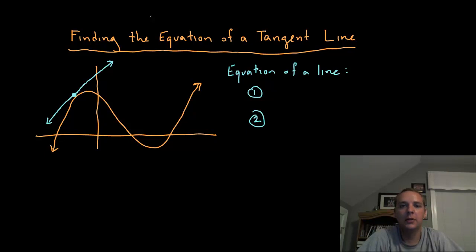We know that the derivative will give us the slope of a curve at any x value that we ask. But sometimes we want to find the equation of the tangent line, not just the slope of the curve at a given x value, but the actual equation of the line tangent to the curve at that point.